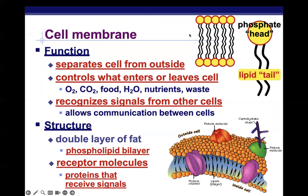Just like the nucleus has a membrane surrounding it, the cell has a membrane surrounding it composed of phospholipids. It separates the inside and outside of the cell, and like the nuclear membrane, it controls what can enter and leave the cell — oxygen, carbon dioxide, food, water, nutrients, and waste. It also recognizes signals from other cells and plays a big role in cell communication. We'll discuss this more next class.